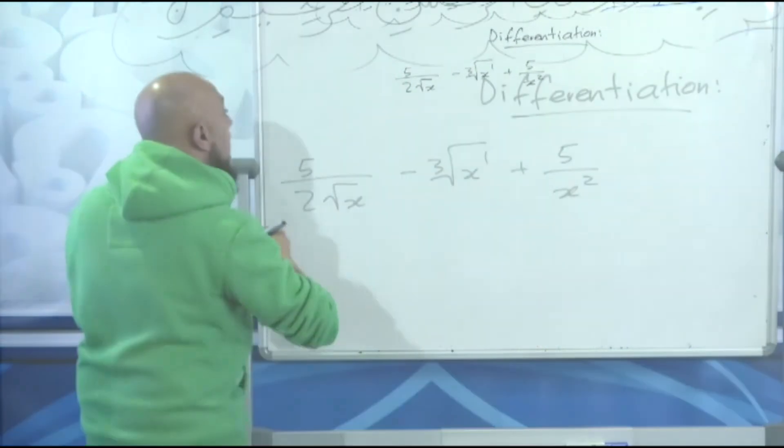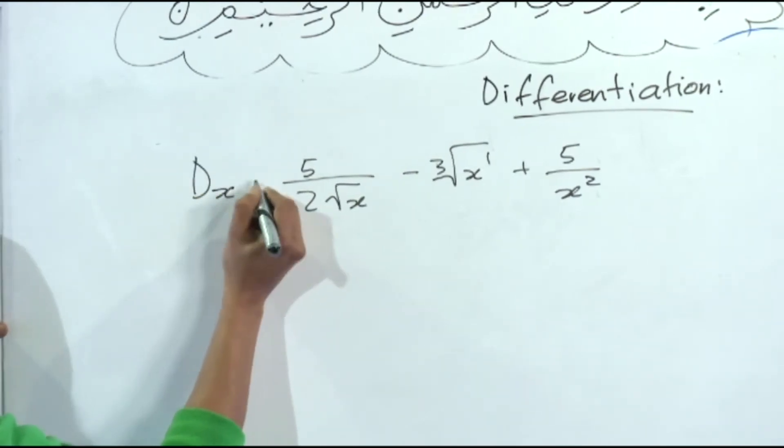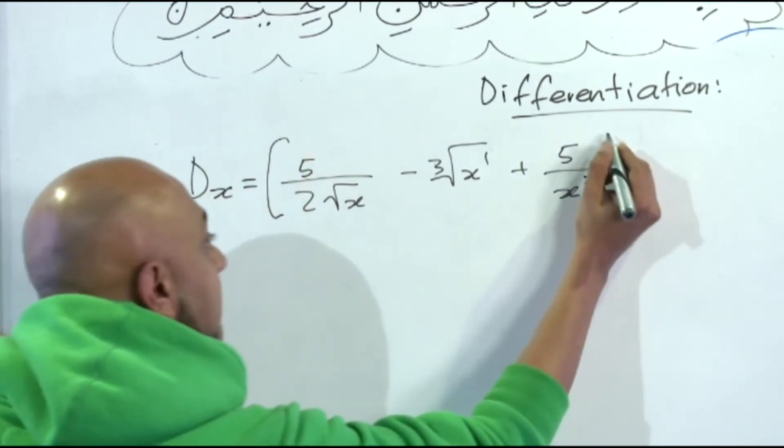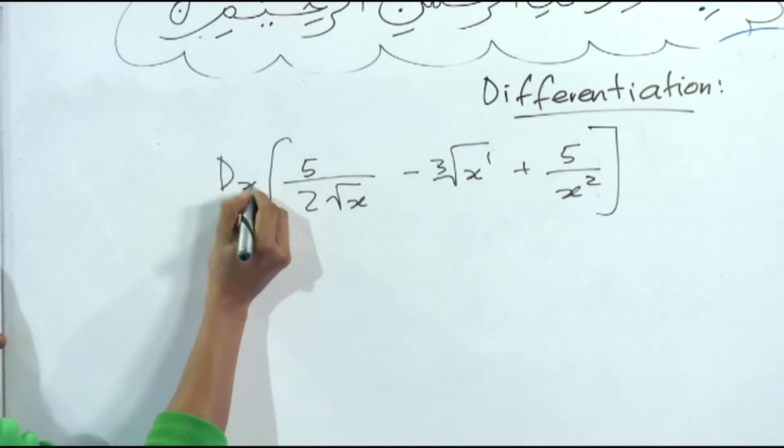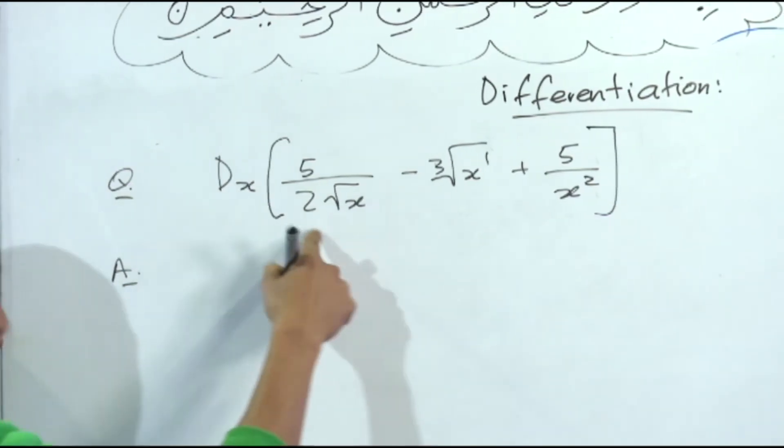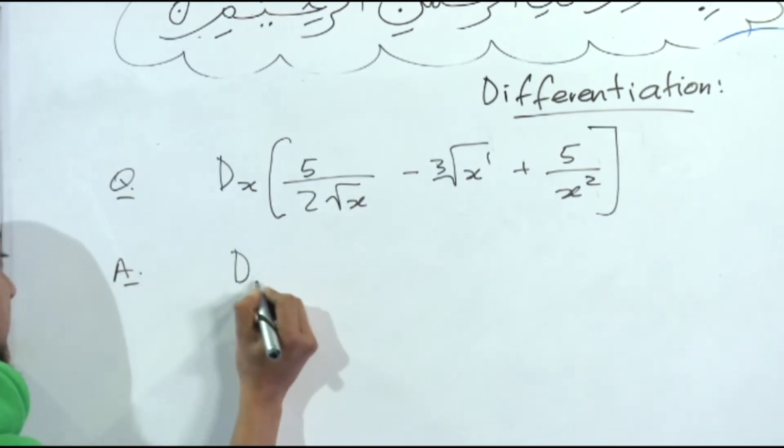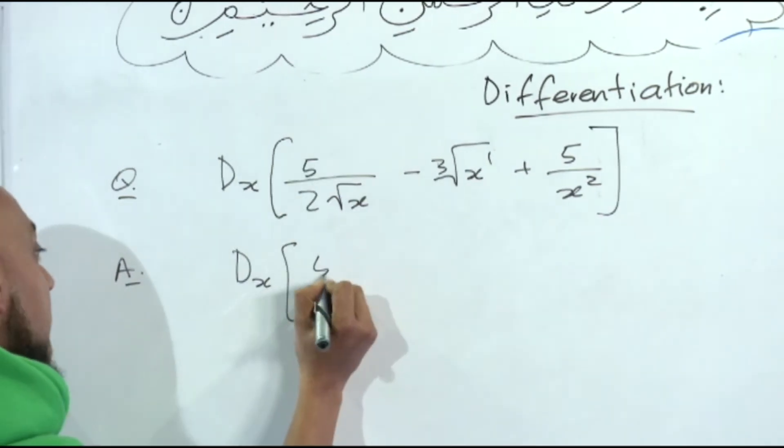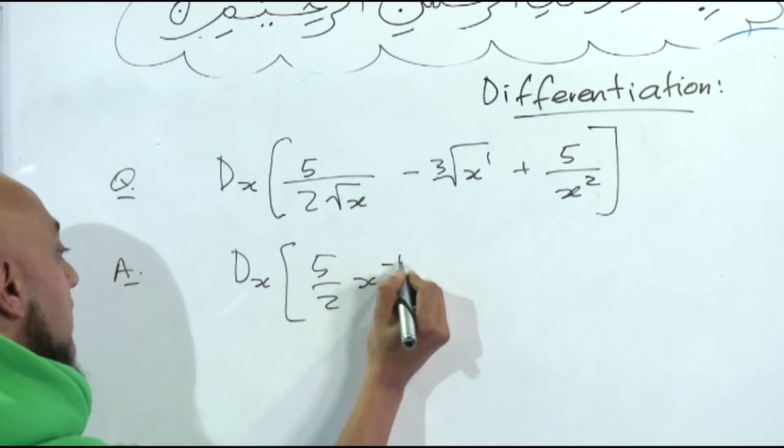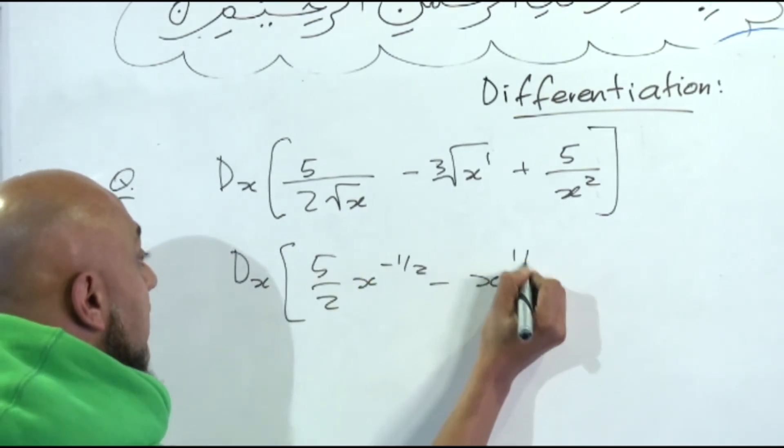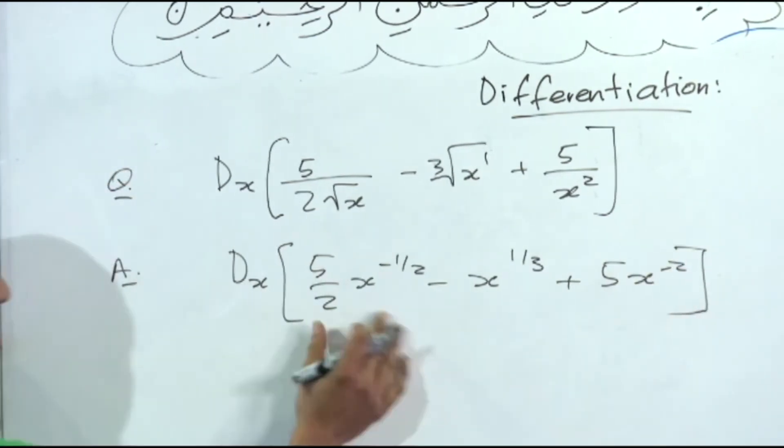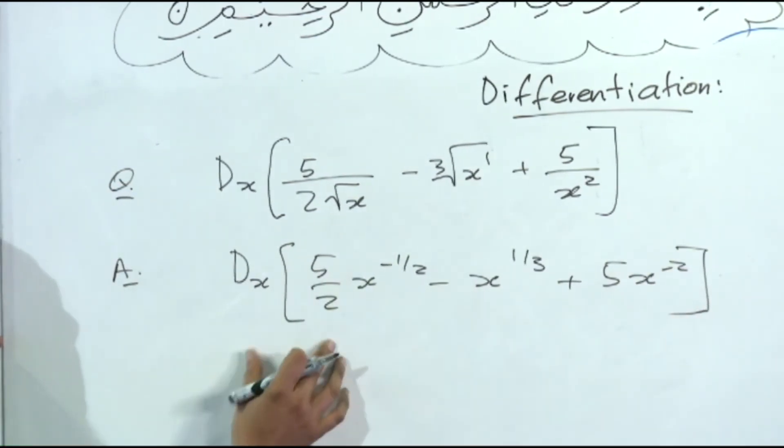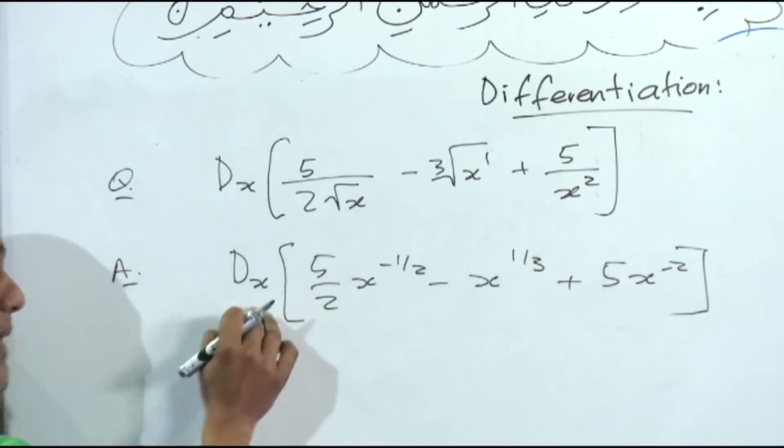So all you do, guys, if this very question was given in terms of dx, while you're simplifying you leave the dx. So you just say dx, you're now going to have 5 over 2 x to the power minus a half, minus x to the power a third, plus 5 x to the minus 2. There, it's still in terms of dx. The minute we find the derivative, blow out the brackets, remove that.